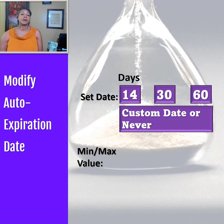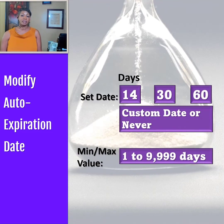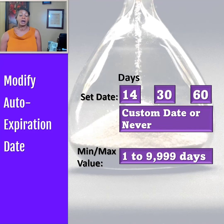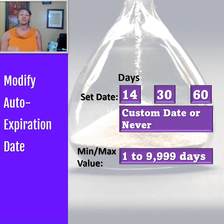Users still have the flexibility to modify the auto expiration date. You can choose set dates of 14, 30, or 60 days. You can enter a customized date between 1 and 9,999 days, which is about 27 years. You do have the option to choose never, but I don't advise it for all of the videos that you're saving. Keep in mind, the main purpose of the auto expiration is to preserve space and retain meaningful files.